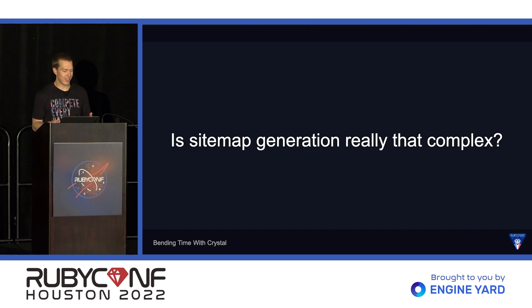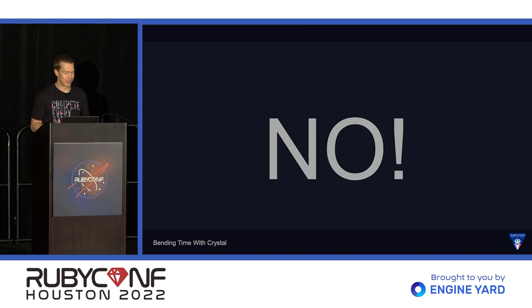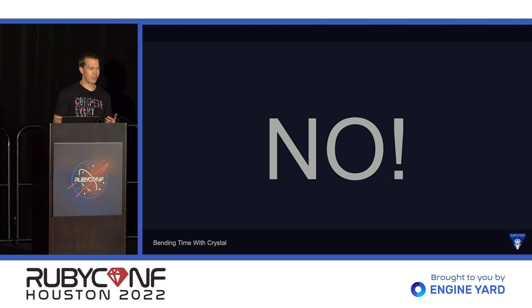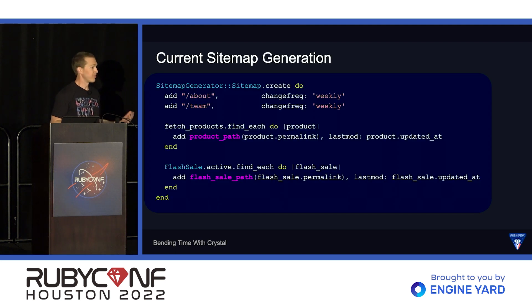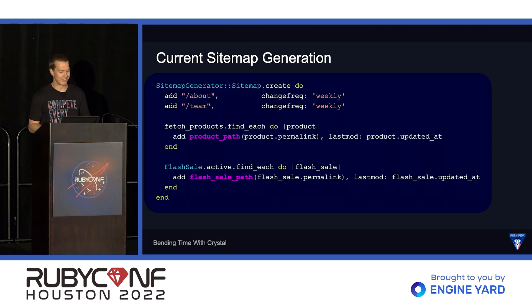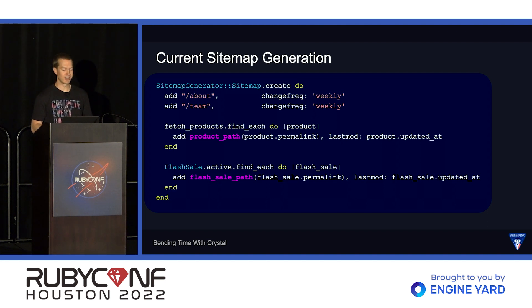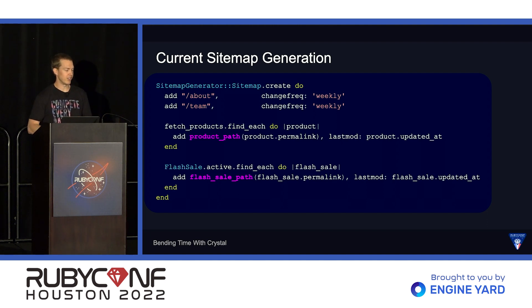So the question is, is sitemap really that complex? It kind of sounds like it — but the answer is no. It's actually incredibly simple, and it's simple enough that we can fit an example on a single readable slide. This is what it looks like in Ruby. The gem is called the sitemap generator. The class we use to generate sitemaps is the sitemap class. We call the create method on that class and pass it a block — this is pretty typical Ruby DSL.